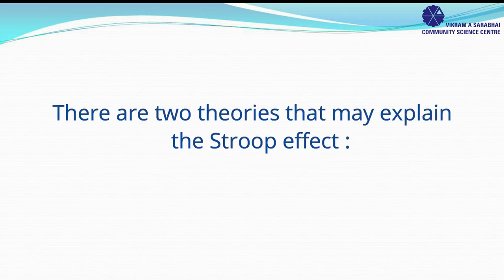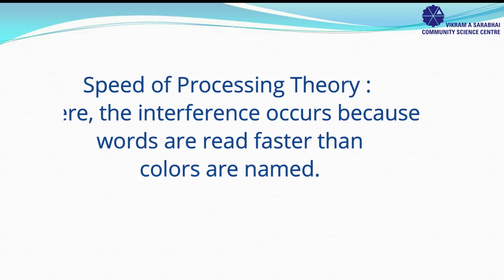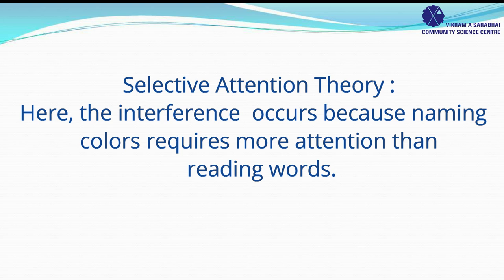There are two theories that may explain this Stroop effect. The first one is the speed of processing theory, where interference occurs because words are read faster than colors are named. The second one is the selective attention theory, where interference occurs because naming colors requires more attention than reading words.